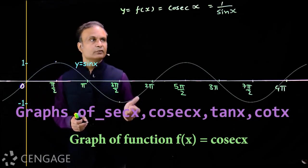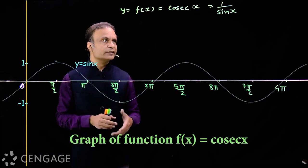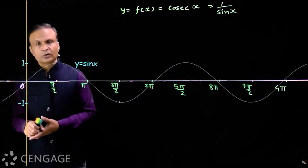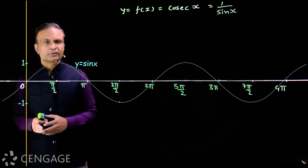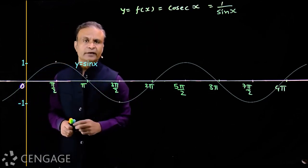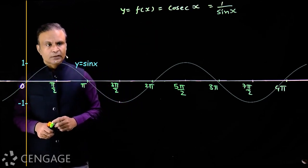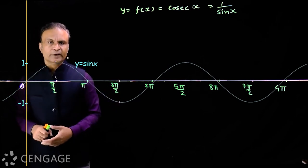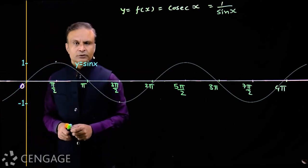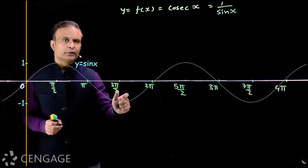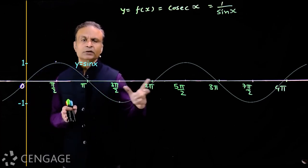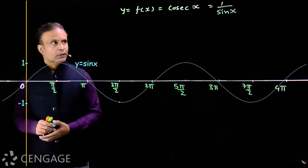Now let's start the graph of function y = f(x) = cosec x. Cosec x is 1/sin x, so this function is defined for non-zero values of sin x. Sin x can take all its possible values but not zero. In the interval 0 to 2π, sin x is 0 when x is 0, π, or 2π. So for these values, cosec x does not exist — it is not defined.